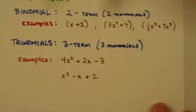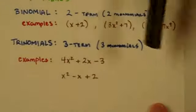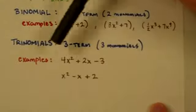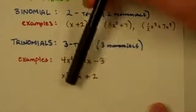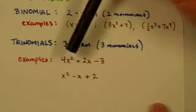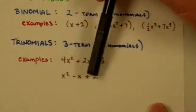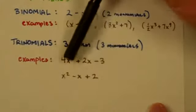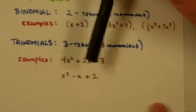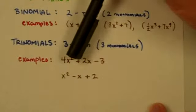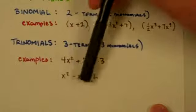But even something like that is a binomial. And then finally we have trinomials. Three terms. So tri means three. Three monomials put together. And they'll usually be in this kind of format right here where we have like 4x squared plus 2x minus 3, x squared minus x plus 2. These specifically when it has a degree of 2 have a special name called a quadratic. And we'll talk more about those later on.